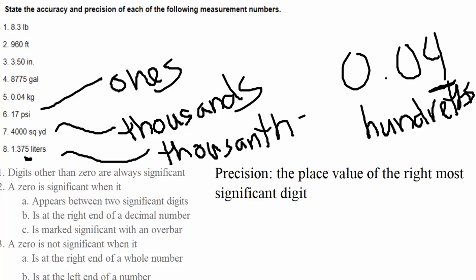The last example, 1.375 liters — the 5 was the right-most significant digit, and that is the thousandths place, so that one is precise to the nearest thousandths. So to summarize: accuracy is how many significant digits there are, and precision is the place value of the right-most significant digit — whatever that place value is, that is your precision.